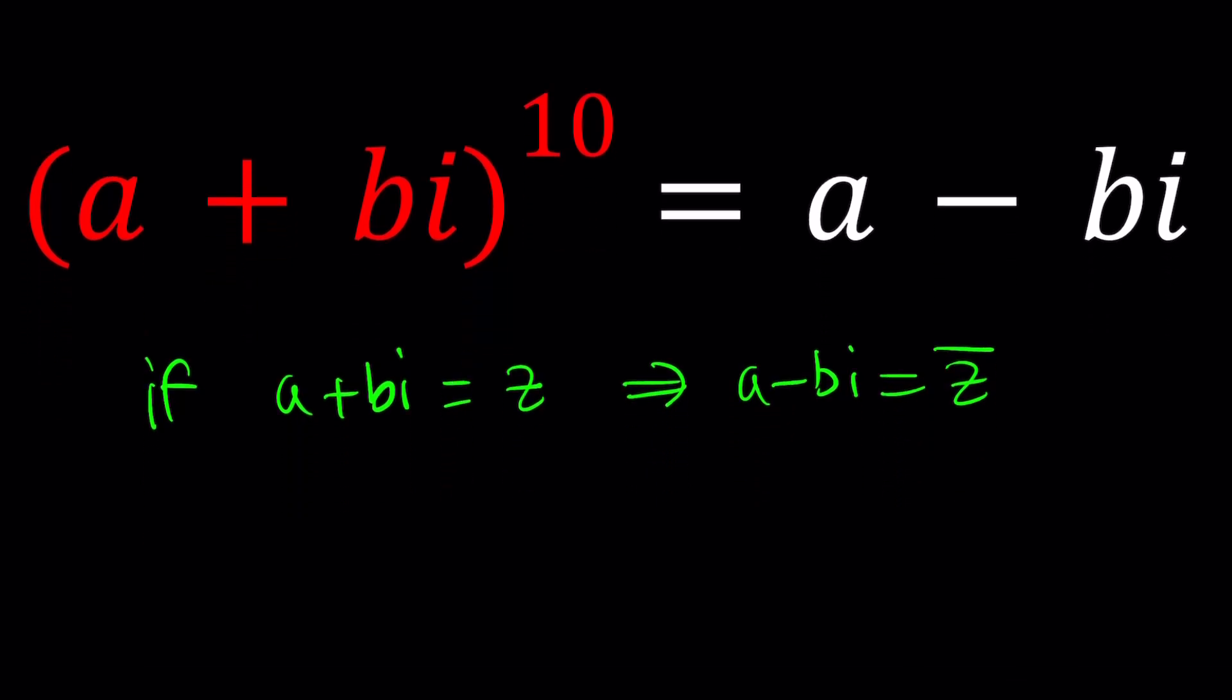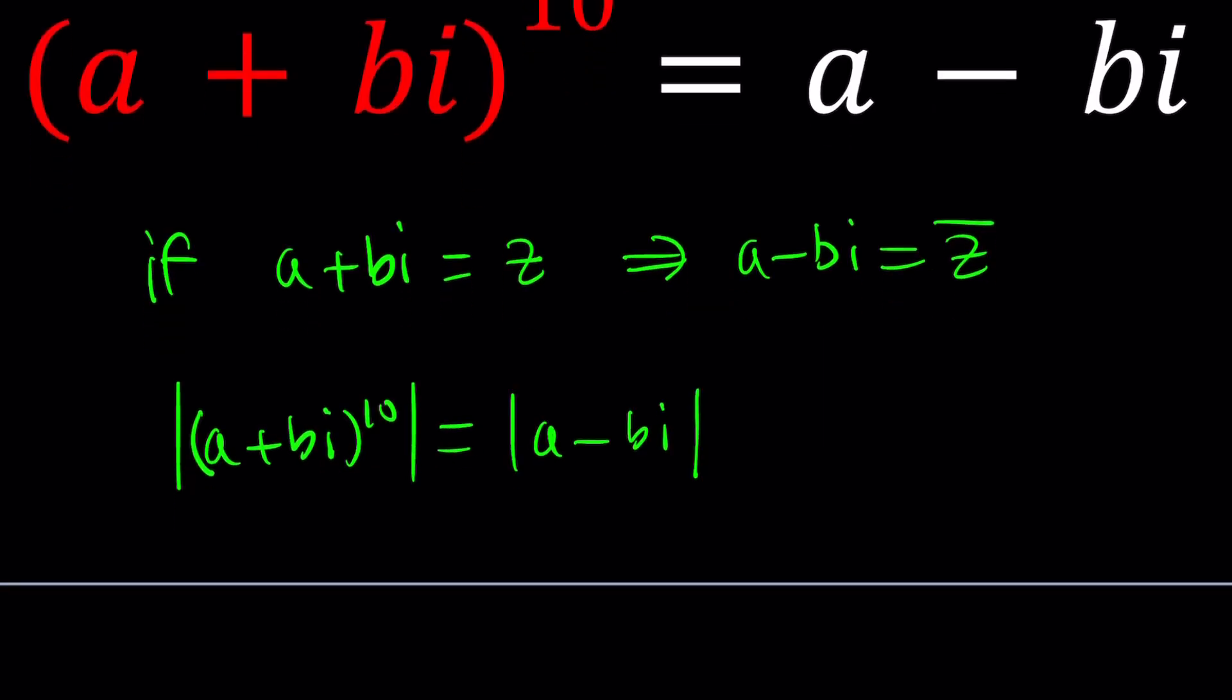Second thing is, if we take the absolute values on both sides, can we do that? Yes, if two complex numbers are equal, then their absolute values are also equal. So the absolute value of a plus bi to the tenth equals the absolute value of a minus bi, which is really cool.